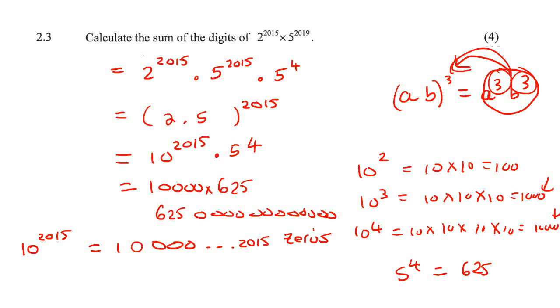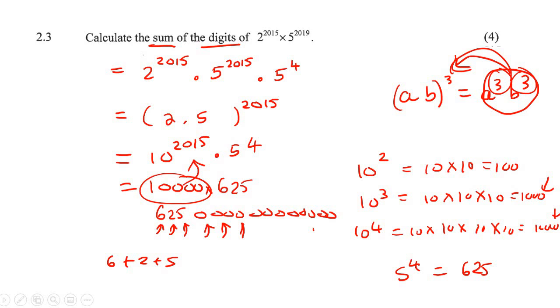But they want us to calculate the sum of the digits. So they just want us to add these numbers together. So it doesn't matter how many zeros you add, because the planet where I'm from, if you add zero, it doesn't change anything. So we actually just need to go add the 6 and the 2 and the 5. So we can just say 6 plus 2 plus 5. This was just an example, by the way. It would be a number that's got 2015 zeros. But if you say 6 plus 2 plus 5, that's just going to give you 13.